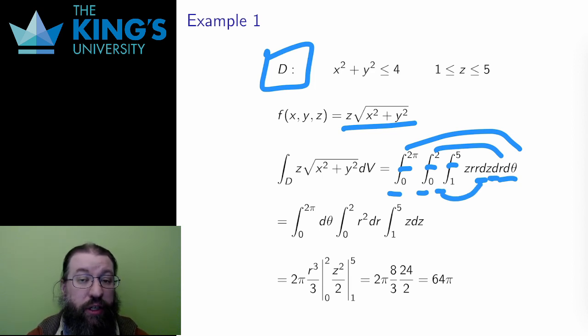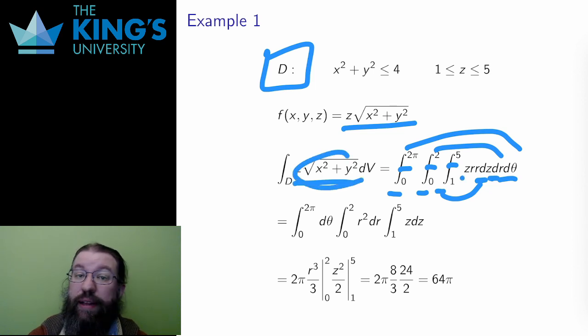Then I change the function. z is still z, and the square root of x squared plus y squared is exactly r, so the function becomes z times r, and finally I need to multiply by an r for the Jacobian term. The result is a separable integral, where all three integrals can be done individually as single variable integrals, and the result of all three multiplied together is 64π.